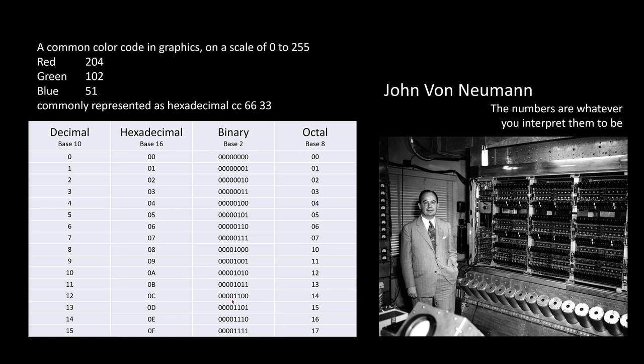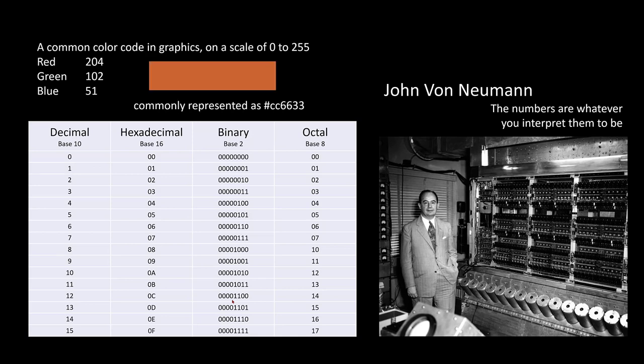A common color code in graphics on a scale of 0 to 255. If you have 204 red, 102 green, and 51 blue, convert that to hexadecimal CC6633. You'll see this shorthand notation with a hashtag in front. If you go into a paint program or Adobe Illustrator where you type in a color or look at a web color, this is where this comes from. CC6633 is Texas Orange or Longhorn Orange.